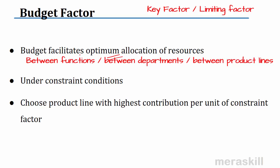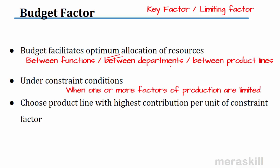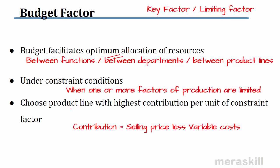While the budget facilitates optimum allocation of resources between functions, departments, and product lines, sometimes we have constraint conditions. If I can make three kinds of products, how do I choose? I choose the product with the highest contribution per unit of the constraint factor.